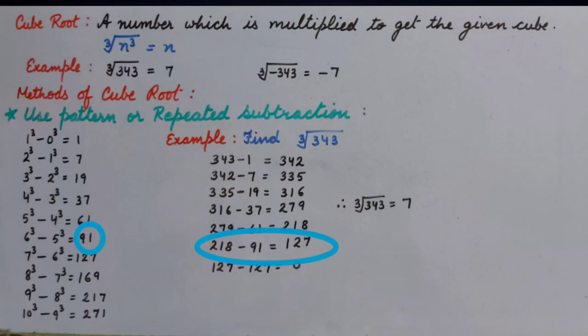127 minus 127 that is 0. So we can see subtracting the pattern from the given number we get 0 in 7 steps. So cube root of 343 is 7.